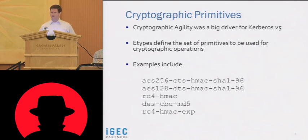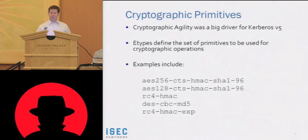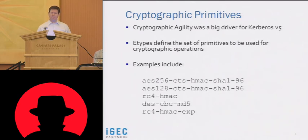Examples of E-types include AES-256 in ciphertext stealing mode with an HMAC using SHA-1 as the hashing algorithm, AES-128, RC4-HMAC — which actually came from Windows and was introduced with Windows 2000, using a 128-bit RC4 key — and DES-CBC-MD5. There's also RC4-HMAC export, similar to RC4-HMAC-128 except truncated to a 56-bit key.